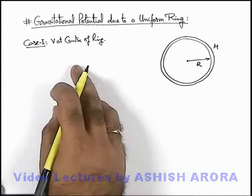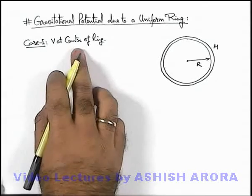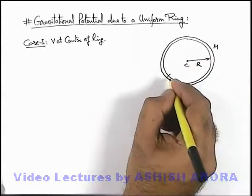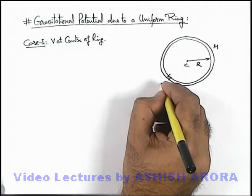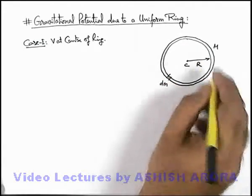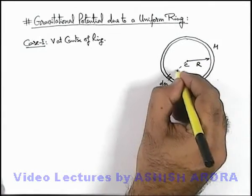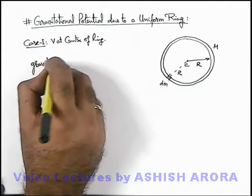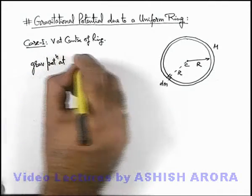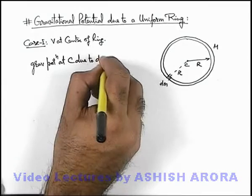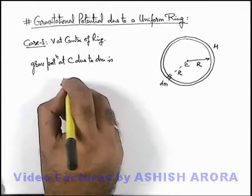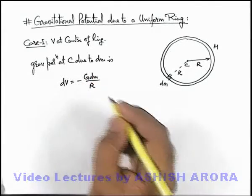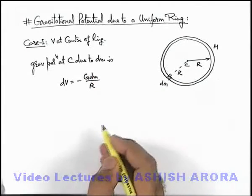As we've studied, potential is a scalar quantity. At point C we wish to find out the gravitational potential, so we consider a small element of mass dm on the circumference of the ring, which is located at a distance r. We can write the gravitational potential at C due to dm as dV = -G·dm/r, which is the result of a point mass at a distance r from this point.